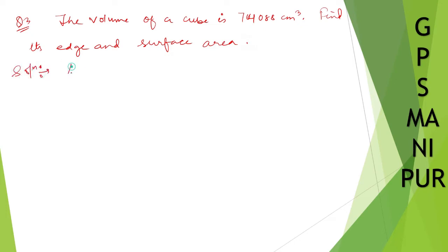Now we are doing exercise 12.3, question number three. The volume of a cube is 74088 cm³. Find its edge and surface area.